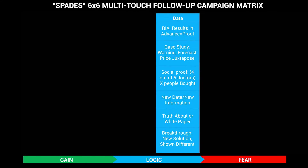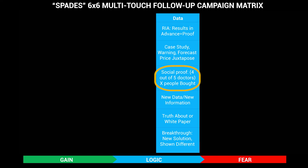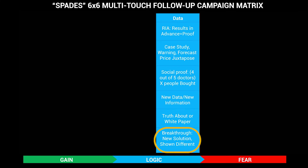Then data. Results in advance — giving people the ability to experience data firsthand — is the most powerful. Case studies, social proof, new data, 'truth about,' white papers, and breakthroughs. These are all logic. So we're engaging the logical brain here, and then we'll go emotional at the end with events and stories.